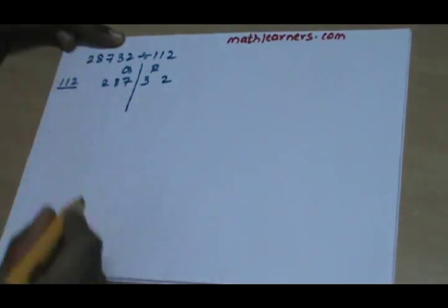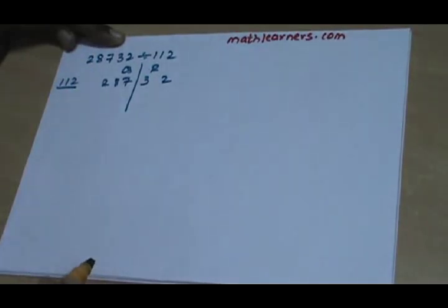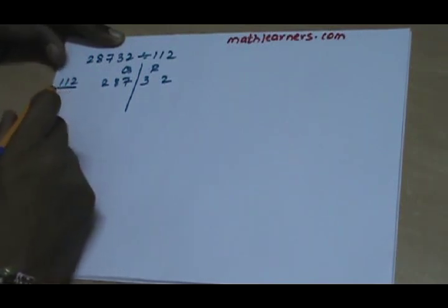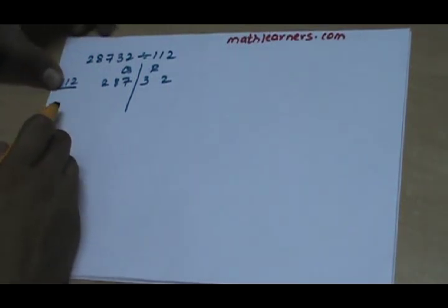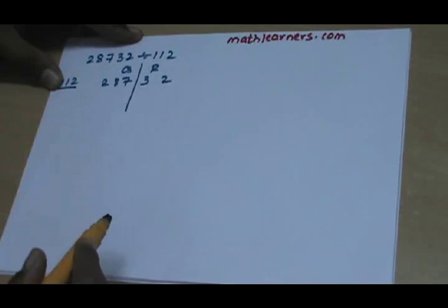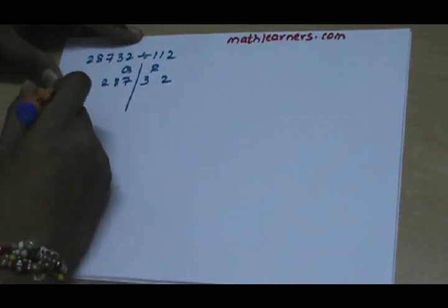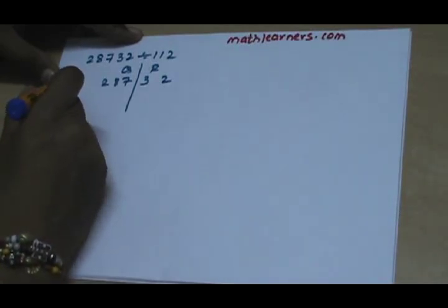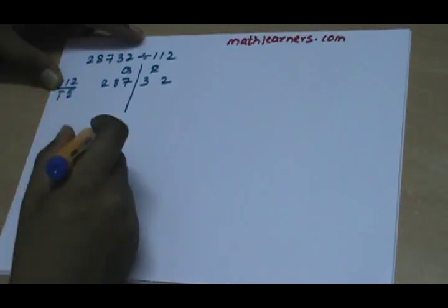Divisor is 112. Paravartya in English means transpose and apply, so we discard first digit and take transpose of the remaining digits. After discarding first digit, two digits are left, 1 and 2. We take transpose of them so that will be bar 1 and bar 2.